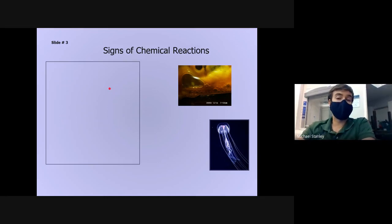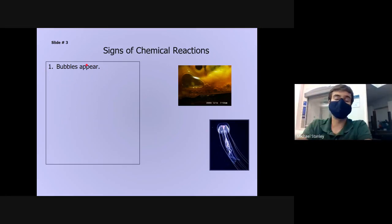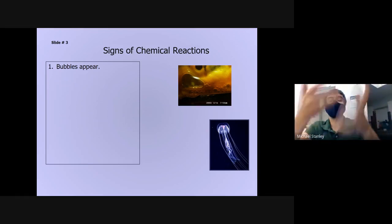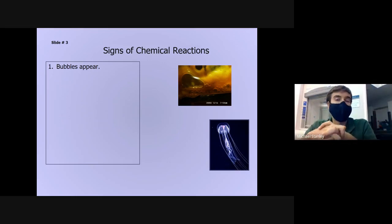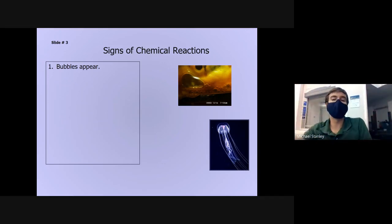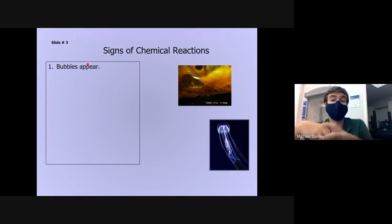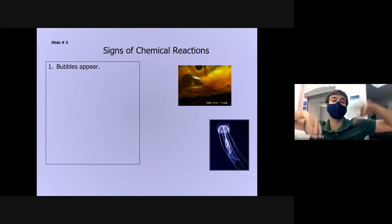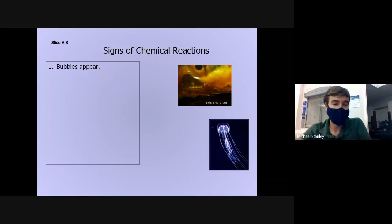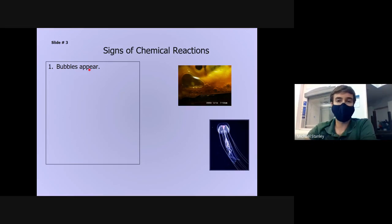One sign we went over when we talked about chemical changes was bubbles appearing. Bubbles appear when a new gas has been created. Like when you drop Alka-Seltzer in water and it starts fizzing and bubbling, or when you mix vinegar and baking soda and get that big lava volcano explosion. That all happens because you're creating all of this new gas that's trying to escape from the liquid. New bubbles showing up when you mix things together could be a sign that a chemical reaction is going on.